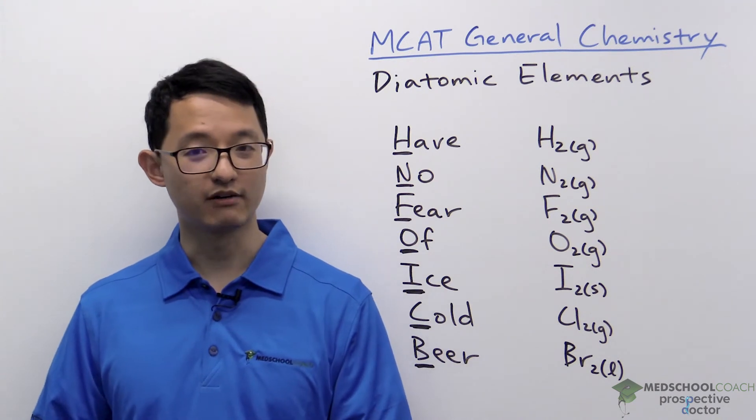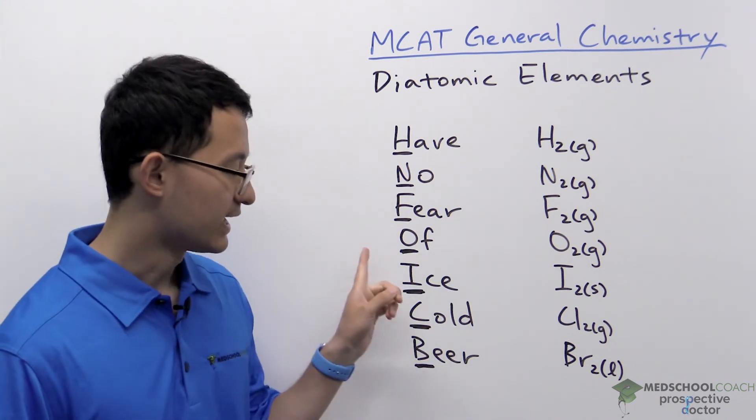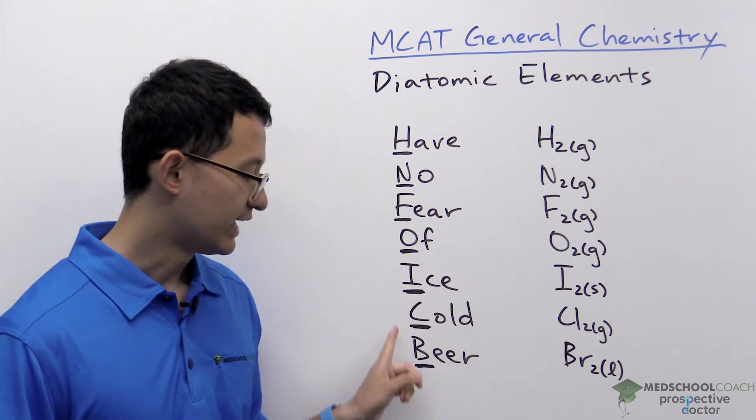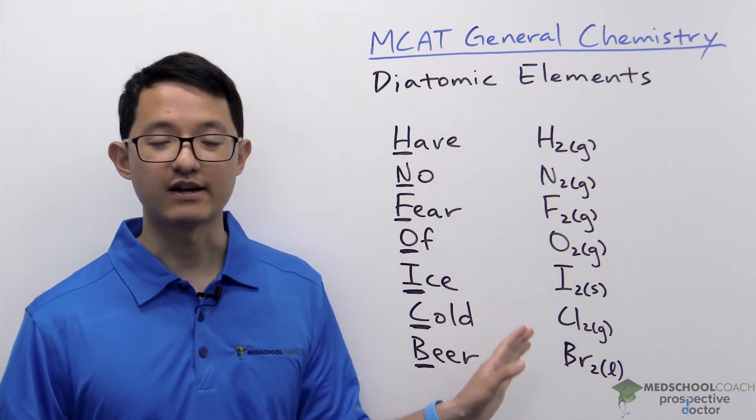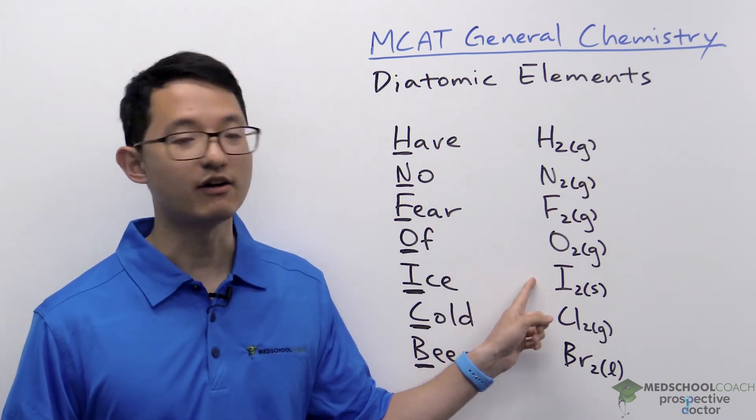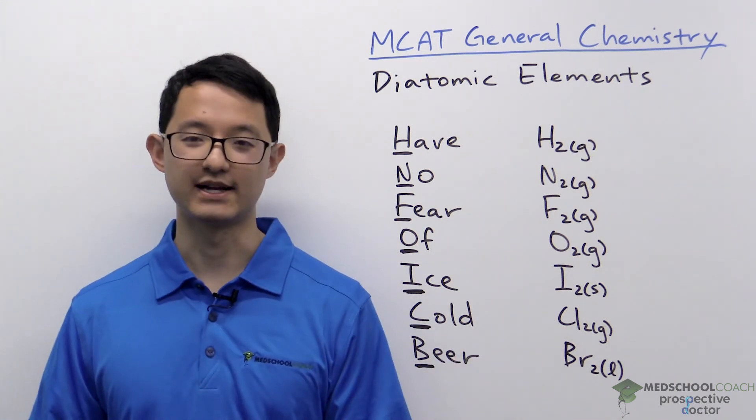And what I particularly like about this mnemonic is you'll notice that ice is a solid and beer is a liquid. All of the diatomic elements are gases except iodine, which is a solid, and bromine, which is a liquid.